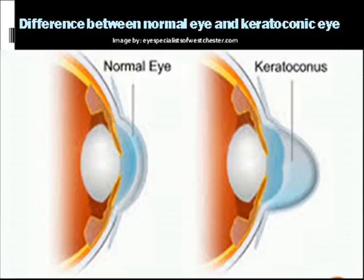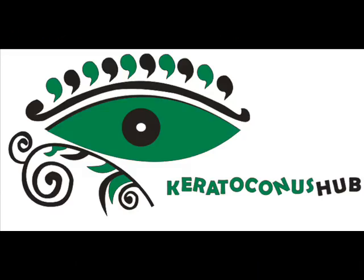This image shows the difference between a normal eye and a keratoconic eye. You can see how the keratoconic eye develops a conical cornea due to corneal thinning. The cornea becomes irregular and cone-shaped, losing its normal round shape.